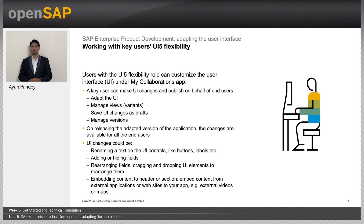UI changes could be renaming a text on the UI control, like buttons, labels, etc. — adding or hiding fields, rearranging fields, dragging and dropping UI elements to rearrange them.